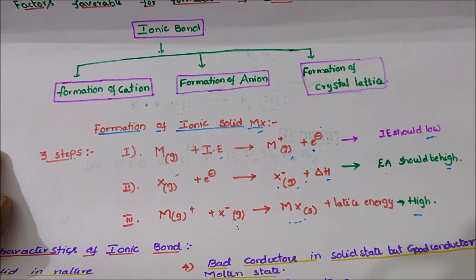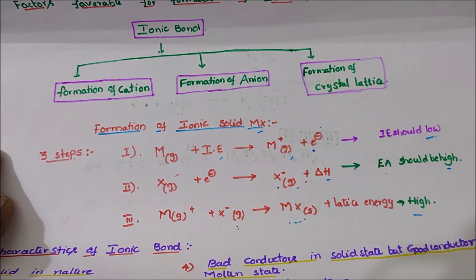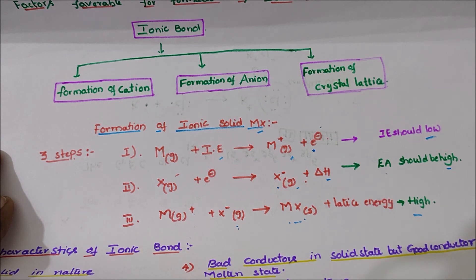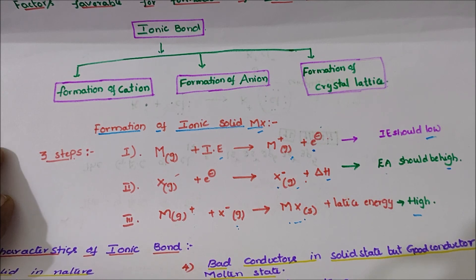Ionic bond formation occurs in three steps. In step one, a uni-positive ion is formed because one electron is removed from the metal atom, so its ionization enthalpy values should be low. In step two, halogens in gaseous state require one electron to attain an anion, and heat is released because electron affinity should be high. In step three, the products of steps one and two combine to give the MX ionic bond in solid state, where lattice energy should be high.